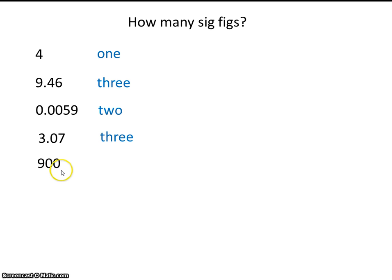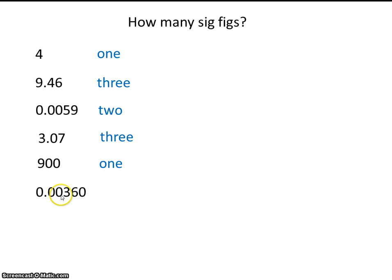Now these are trailing zeros. Trailing zeros may or may not be significant, depending on the presence of a decimal place. Now this number, 900, does not have a decimal place, so these trailing zeros are not significant — this number has 1 sig fig. Here we have some leading zeros, which are never significant, and then here we have a trailing zero. A trailing zero in a number that has a decimal place is significant, so this number has 3 sig figs.